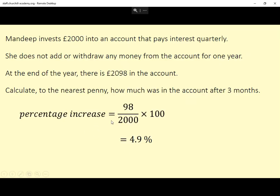It's increased by £98, divided by the original amount of £2,000, multiplied by 100. So it's gone up by 4.9% in a year, so that means the AER would have been 4.9%.